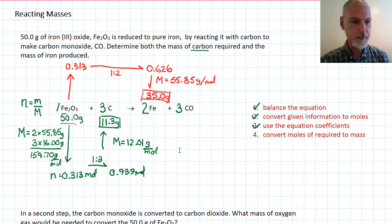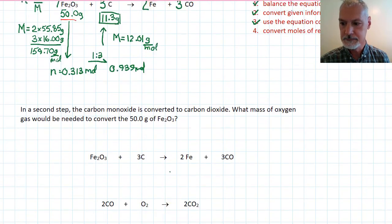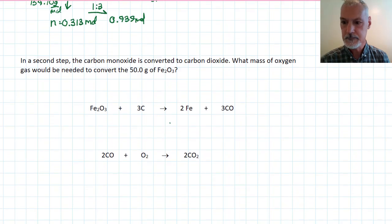Now, there's a second step that happens in this process, and I'll show it to you here. We take our first reaction, which produces carbon monoxide. The carbon monoxide from this reaction is then used in a second reaction, combining with oxygen, to produce less harmful carbon dioxide.